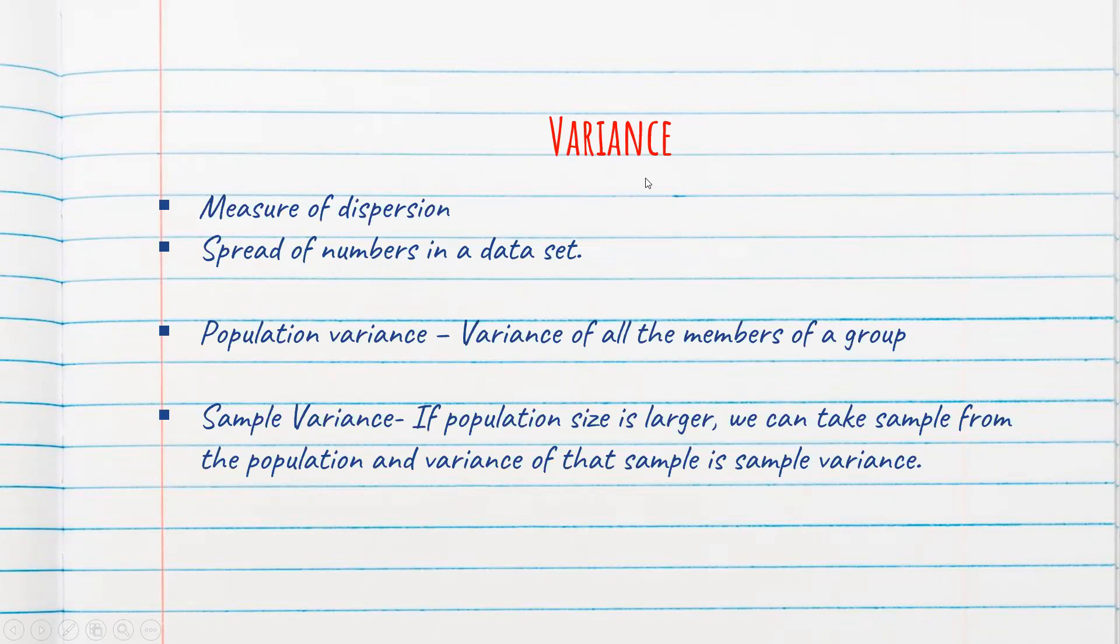Let us now try to understand about variance. Variance is the measure of dispersion. It is also spread of numbers in a data set. So for the variance we can find out population variance and also sample variance. Population variance is variance of all the members of a group. Sample variance: whenever the population size is larger, we can take a subset of data which is nothing but sample from the population and we can find out the variance of that sample which is basically called sample variance.